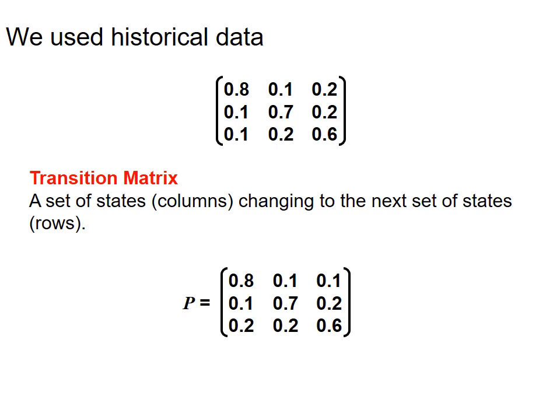We use the historical data in the example to make the transition matrix. A set of status columns change to the next set of status rows. The first column in the historical data matrix will become the first row, the second column will become the second row, and the third column will become the third row.